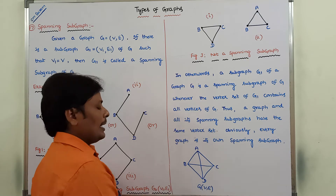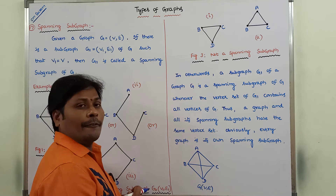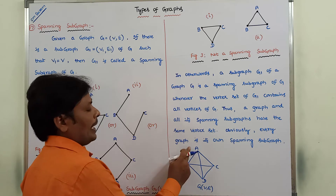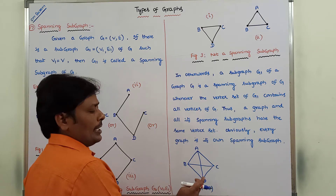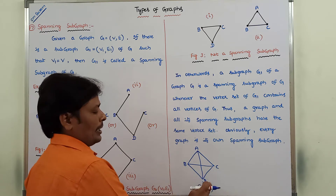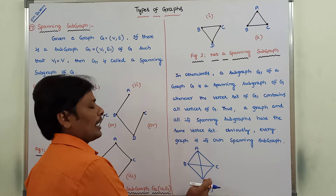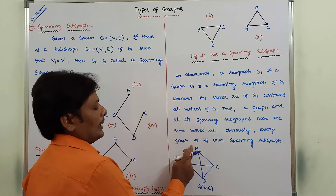And E is nothing but set of edges. So the edge set is: A comma B, B comma D, C comma D, B comma C, A comma D, and A comma C.